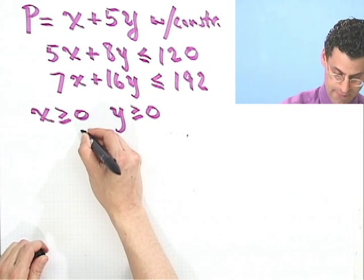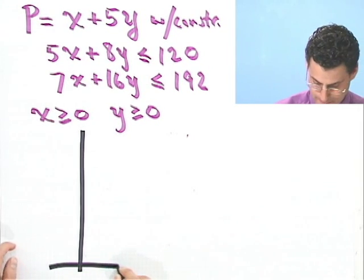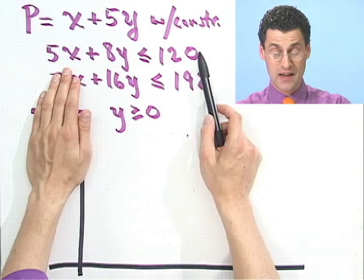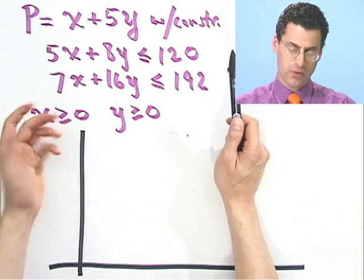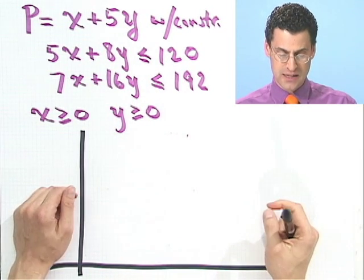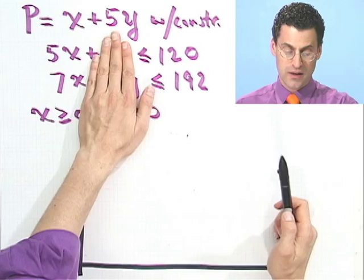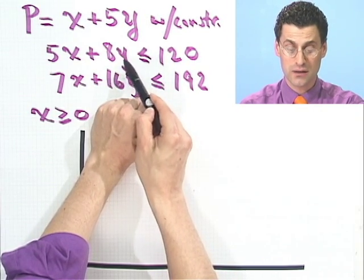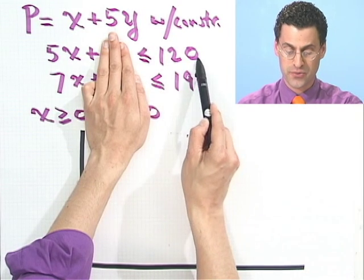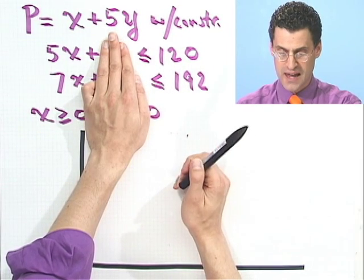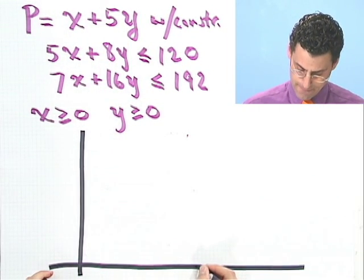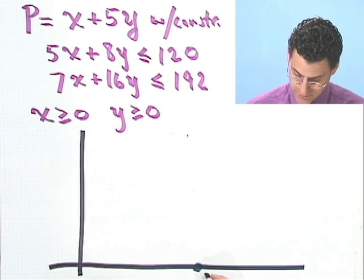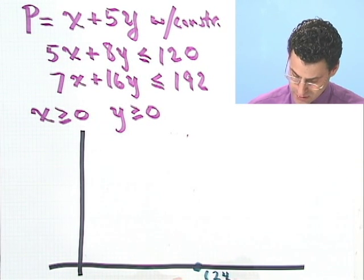If I set up my axes, then what I'm going to do is first I'll just graph this line and then figure out how the shading goes. For this line, what I might want to do is just find the intercepts. So if I let y equal 0, that's going to show me where the x-intercept is. So I just put in 0 for y, and I see 5x equals 120, so x would be 24. So this is the point 24, 0.